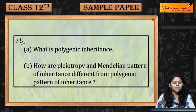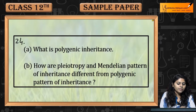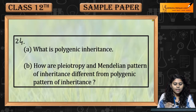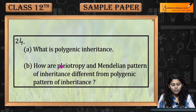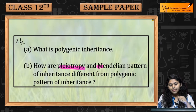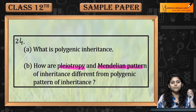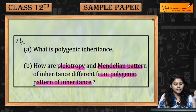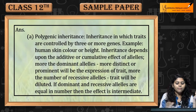Question number 24. What is polygenic inheritance? How are pleiotropy and Mendelian pattern of inheritance different from polygenic pattern of inheritance?